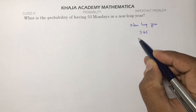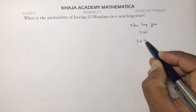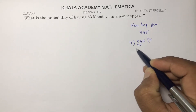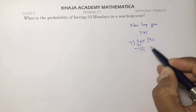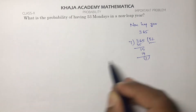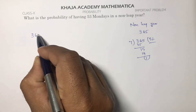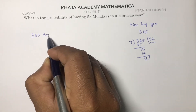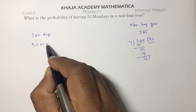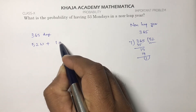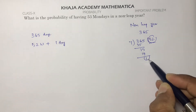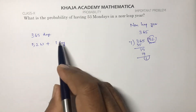So 365 divided by 7 gives us 52 weeks in a non-leap year, with one extra day remaining. So we have 52 weeks plus one extra day.